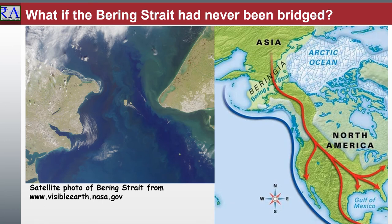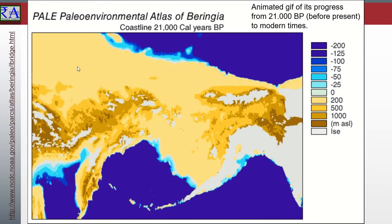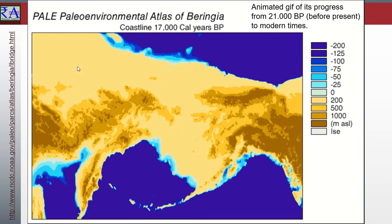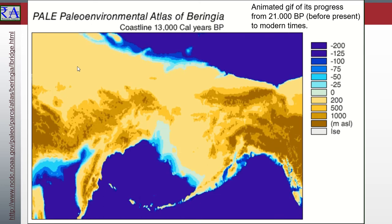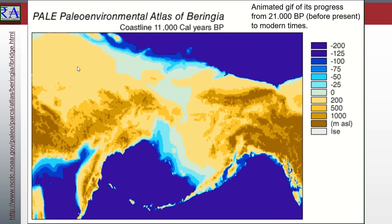Surface waters were mostly frozen, locked in terrestrial glaciers and sea ice. This meant there was less water resting in the oceans. Sea levels stood about 120 meters — 400 feet — lower than today. That means the Bering Straits were open fields and boreal forests, connecting these two continents.